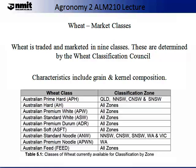Wheat is traded according to its market class. Different countries have different market classes. For example, America has five to six classes, while Australia has nine. In Australia, the market class has been defined by the Wheat Classification Council. In summary, Table 5.1 lists the classes of wheat currently available for classification by zone. They include Australian Prime Hard, Australian Hard, Australian Premium White, Australian Standard White, Australian Premium Durum, Australian Soft, Australian Standard Noodle, Australian Premium Noodle and Australian Feed. Some of these classes are classified to specific areas of Australia, while others are found in all areas.